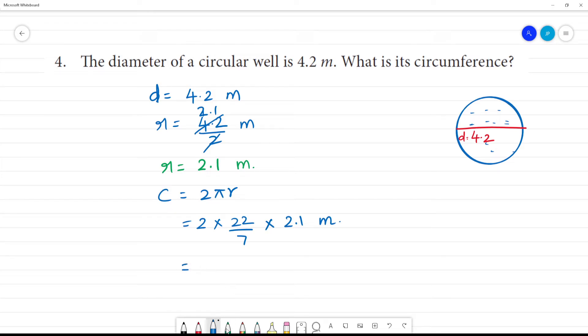Now we can cancel. 2.1 by 7. We can cancel 2.1 by 7. Remove the decimal point, it becomes 21. Then divide by 7. 21 divided by 7 is 3. Now we can cancel. We have 0.3. Next, 22 into 2 is 44 multiplied by 0.3.